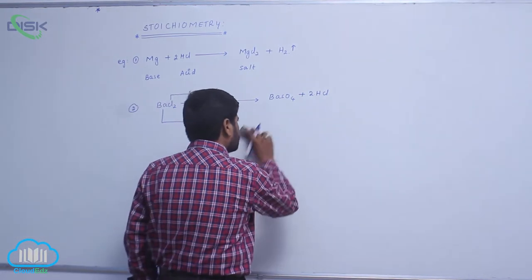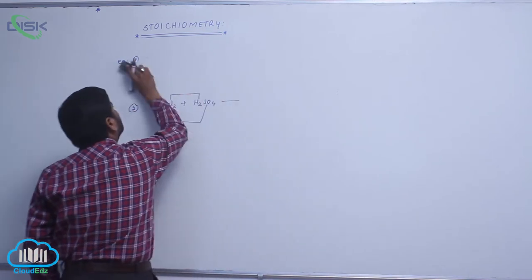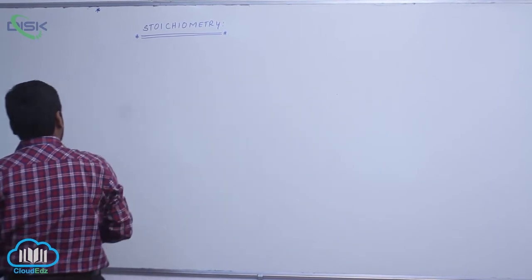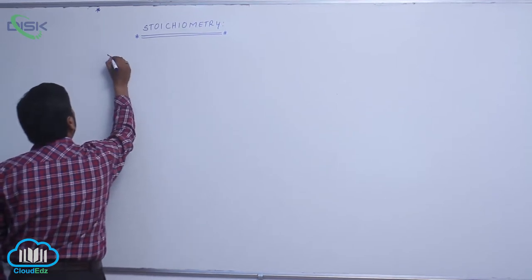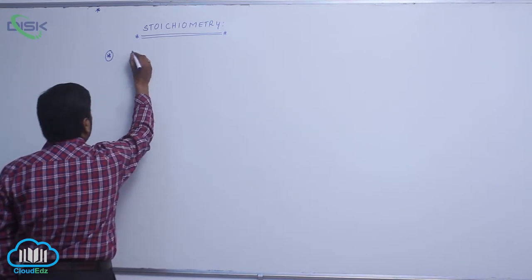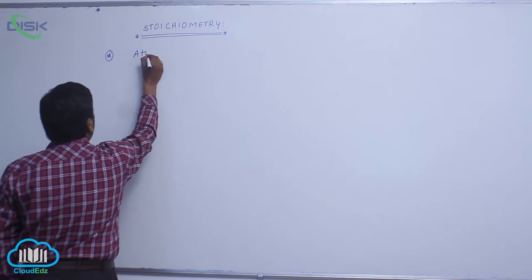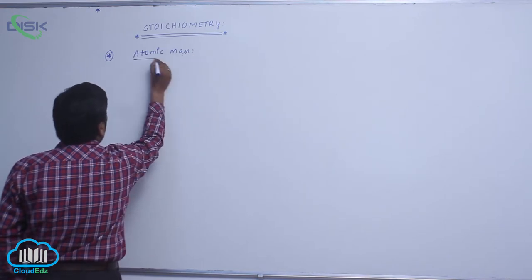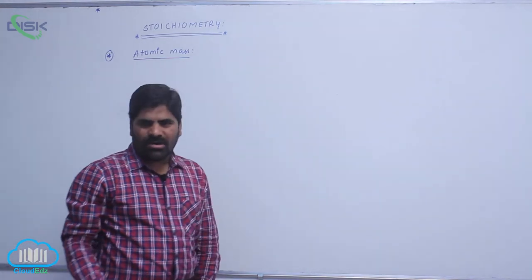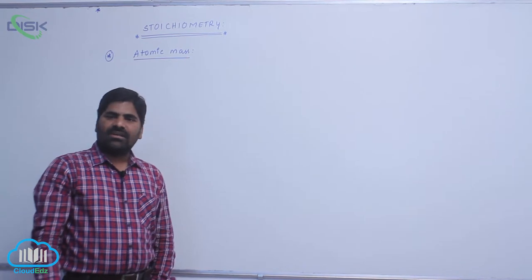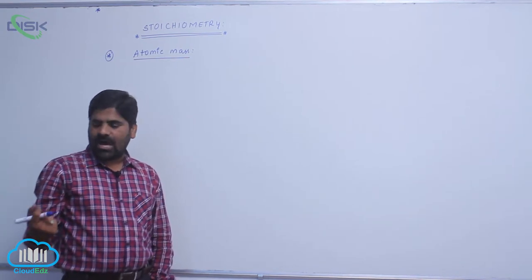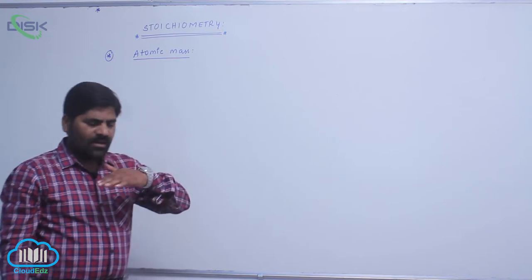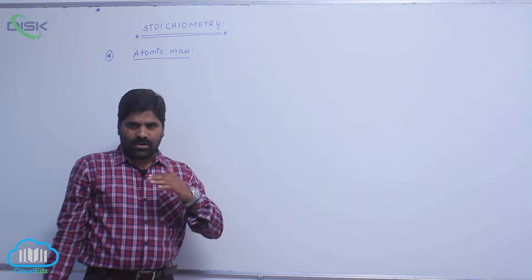The first topic is atomic mass, followed by molecular mass and the mole concept. After this, I will discuss the law of chemical combination, then concentration terms, and finally we will go to the balancing of chemical equations. This is the process to discuss this chapter so it can be understood easily.